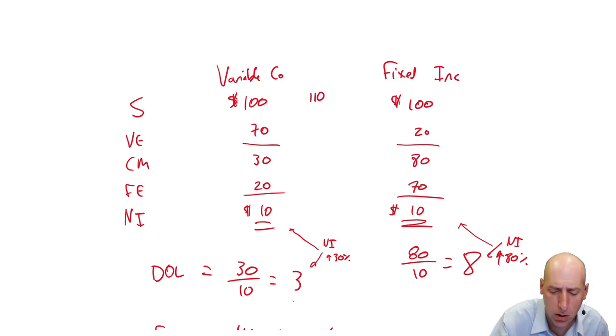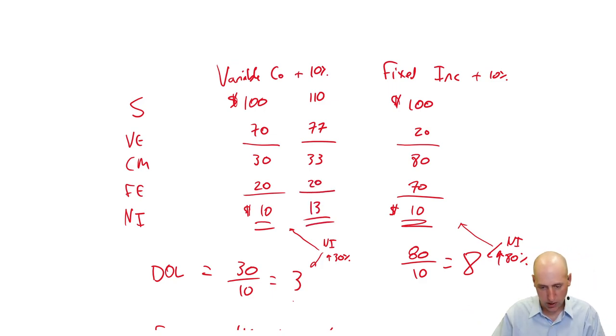So, Variable Co plus 10% income statement. Variable Co sells 10% more stuff, therefore, its sales revenue goes up 10%. Well, when we sell 10% more stuff, guess what? Our Variable Costs go up 10% as well. Variable Costs go up to 77%, CM 33, fixed expenses remain 20%, and yes, indeed, a 10% increase in revenue yielded a 30% increase in profit.